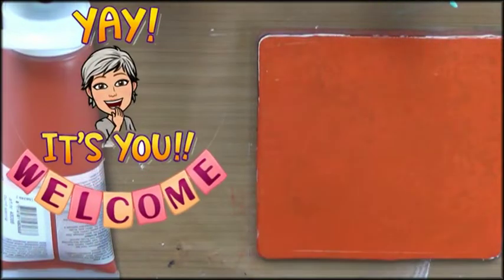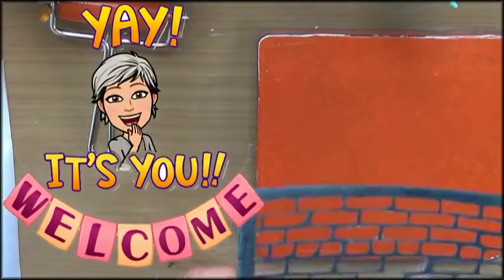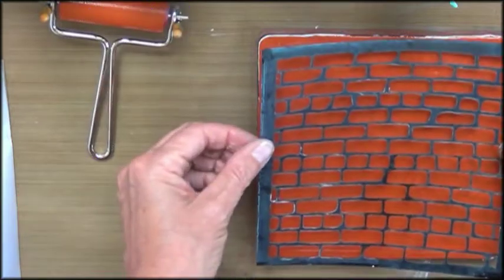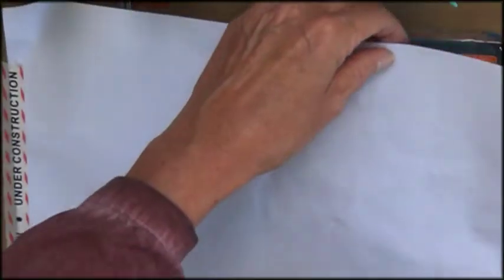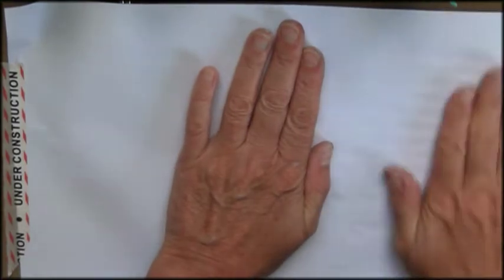In today's video I wanted to make a distressed, grungy background of a brick wall on my jelly plate. And the trick for the grungy effect is to build up the layers.